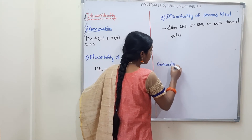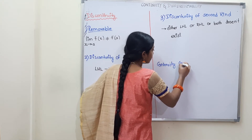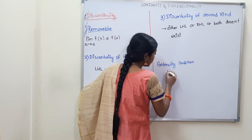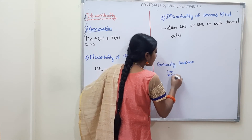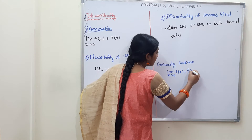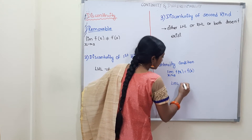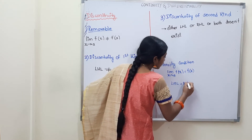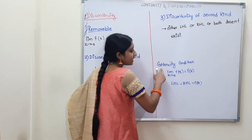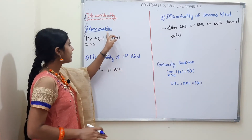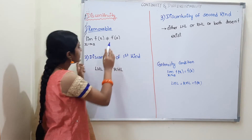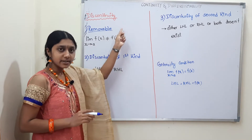What is the condition for continuity? The condition for continuity is: the limit of x tends to a of f(x) is equal to f(a). That means LHL is equal to RHL is equal to f(a). This is continuity. If this is not equal to f(a), this is removable discontinuity.